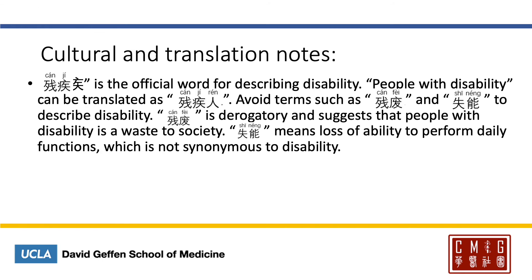A note on disability: 残疾 is the official word for describing disability in Chinese, so to say 'people with disability' you can say 残疾人. The terms to avoid are 残废 and 失能. 残废 is derogatory and suggests that people with disability are a waste. And 失能 means loss of ability to perform daily functions, which is not synonymous with disability.